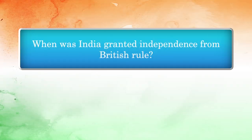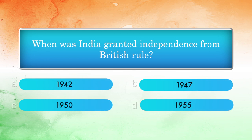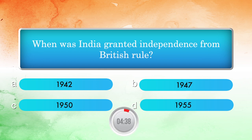When was India granted independence from British rule? Options: 1942, 1947, 1950, 1955. Answer: 1947.